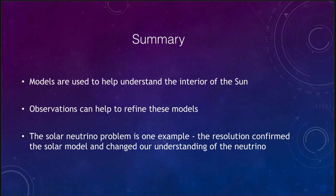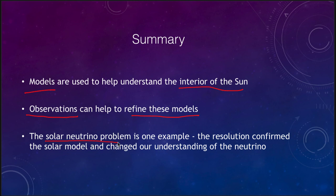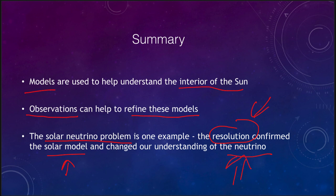In summary: we can use models to understand the interior of the Sun even though we cannot see it directly. We use observations of surface conditions and oscillations in the Sun to refine these models and make them more accurate. The solar neutrino problem is one key example — its resolution confirmed the solar model and changed our understanding of neutrinos, learning that they can oscillate between flavors. That concludes our lecture on solar interior theory and observation. We'll be back again next time for another topic in astronomy — until then, have a great day everyone.